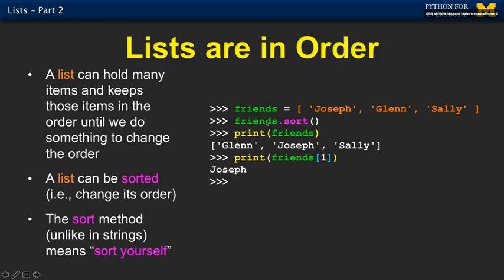And then now it has been changed, right? So it actually changes it. And so it's now in alphabetical order, Glenn, Joseph, and Sally. And friend sub one is the new sub one. And so this actually changes it because lists are mutable.